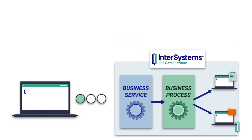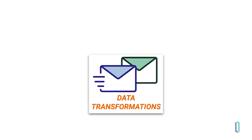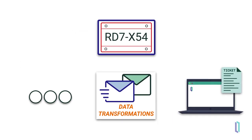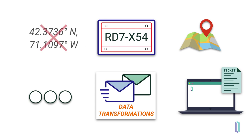The business process can also apply data transformations. For example, if the ticket application simply needs to know the license plate and the location, but doesn't need to know the actual coordinates of the violation,